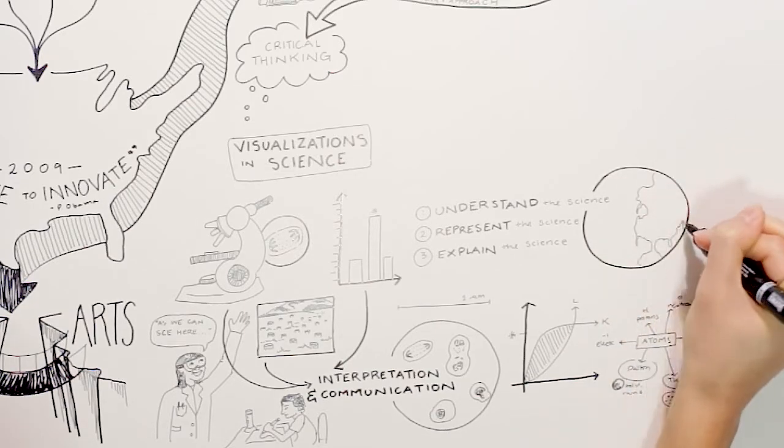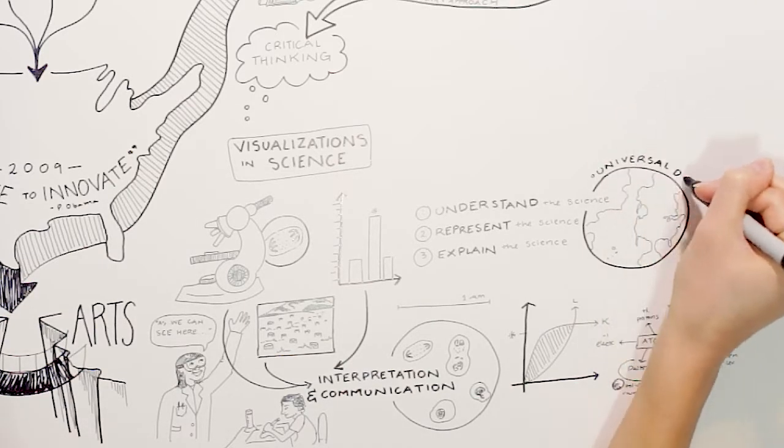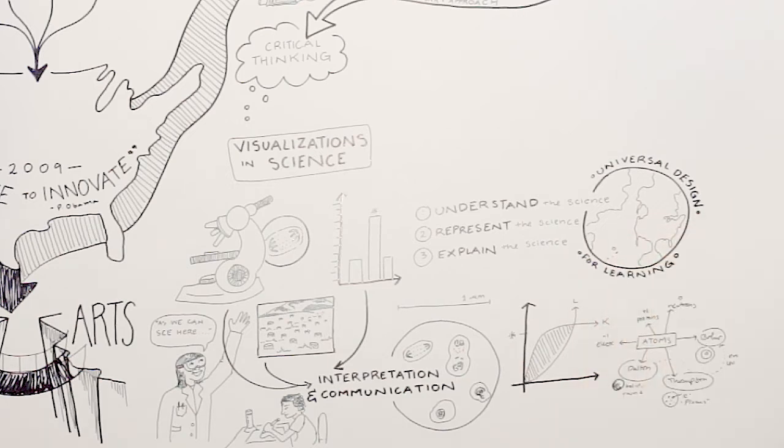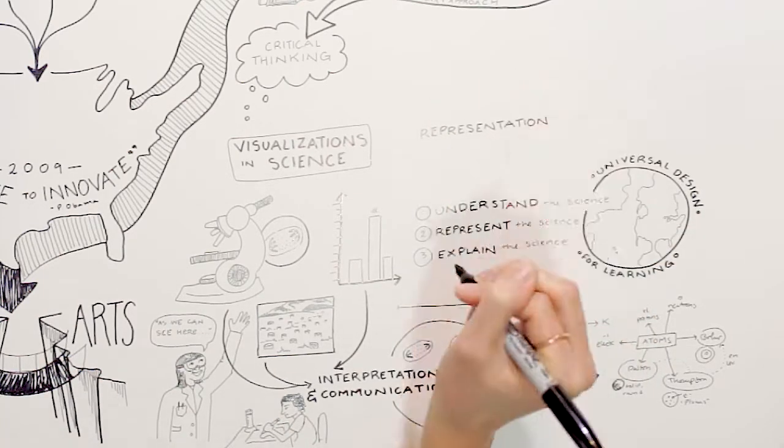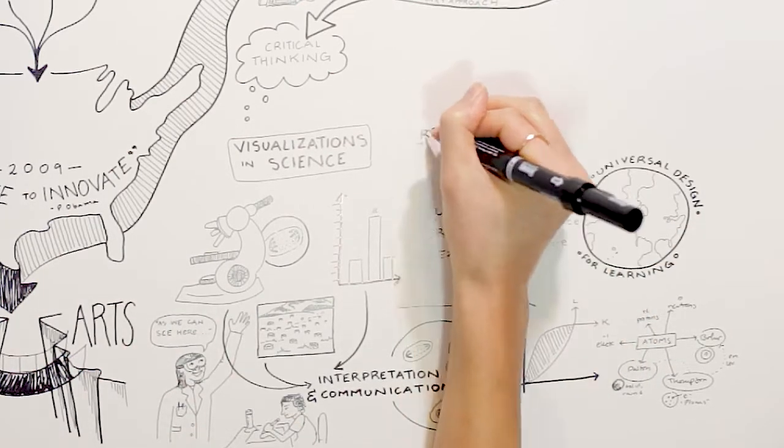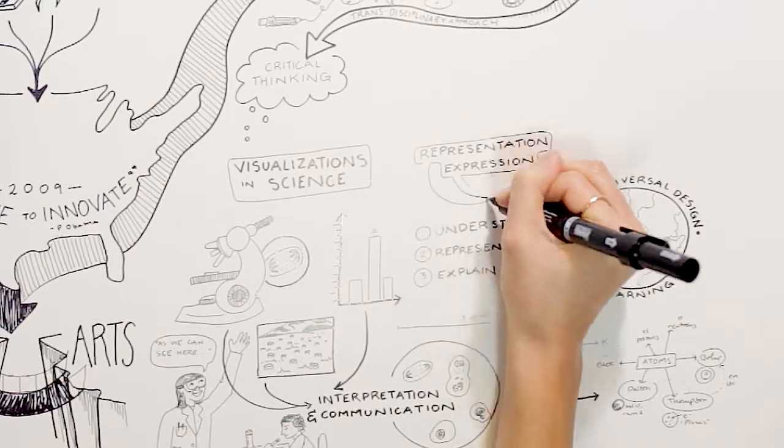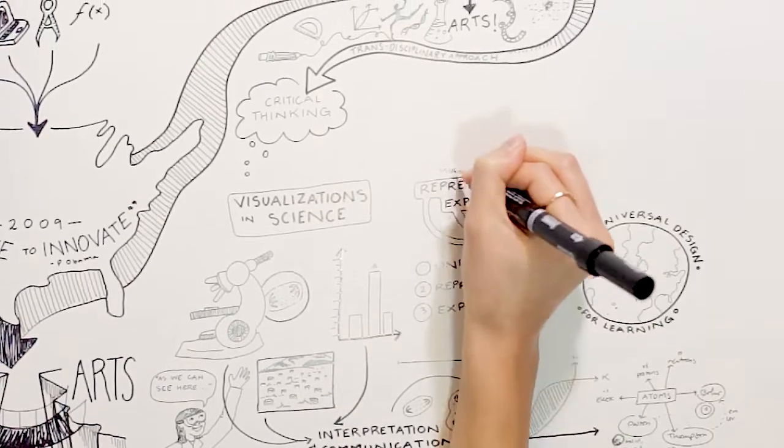Use of the arts within science contexts connects strongly to the universal design for learning. In this model, multiple modes of representation and multiple means of expression fall easily within a visual and artistic context.